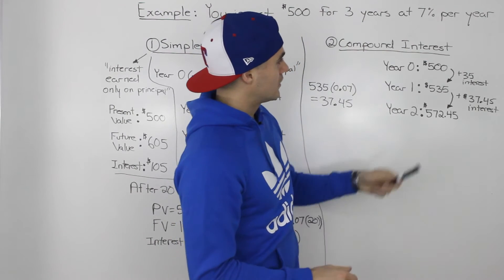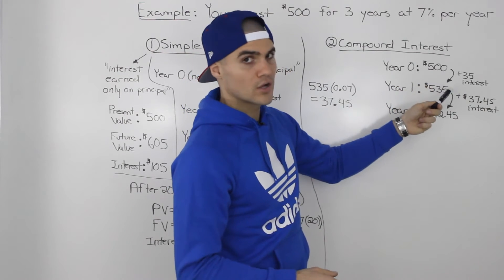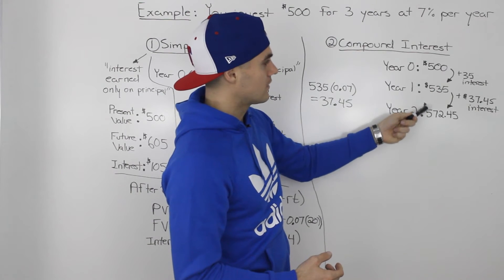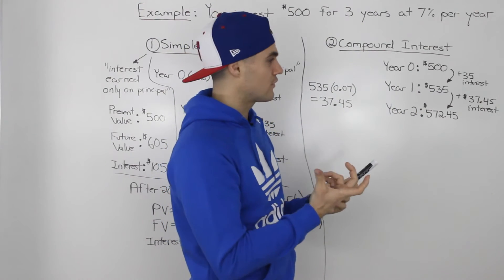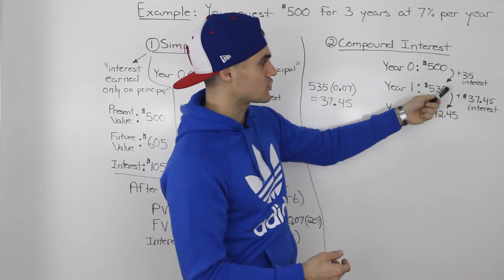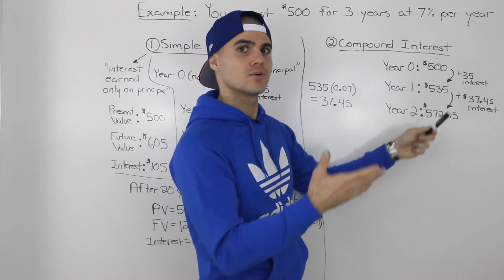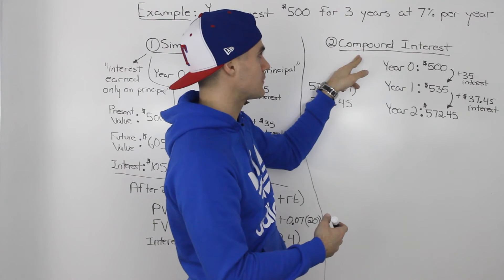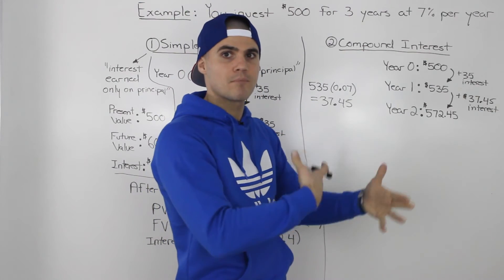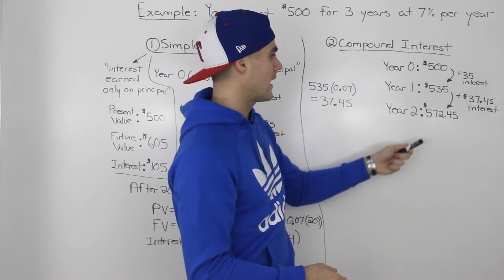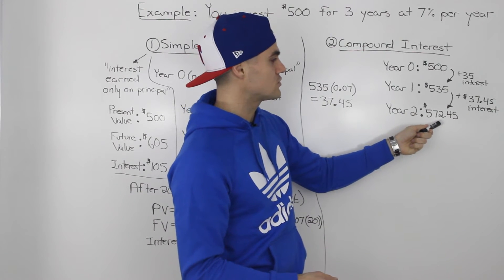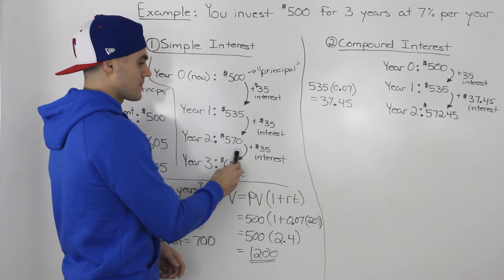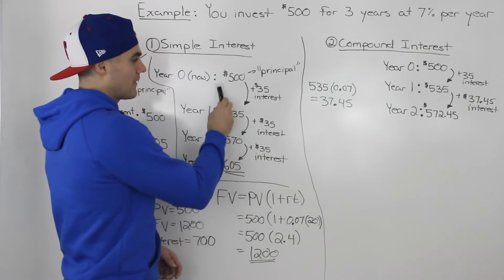Notice what happened here: the initial $500 earned $35 in the first year, but in the second year, you earn interest not only on that initial $500 but also on that $35 interest you earned in the first year. It's interest on interest — hence the name compound interest. At the end of the second year you have $572.45, instead of $570 with simple interest.